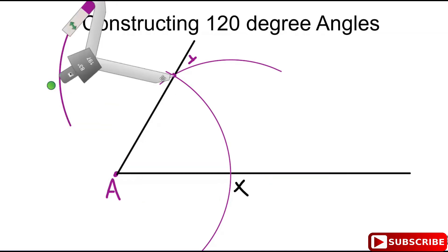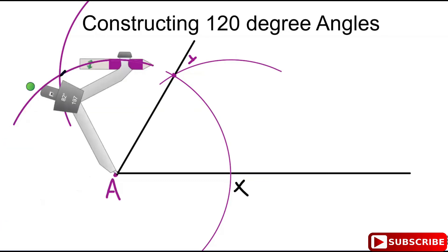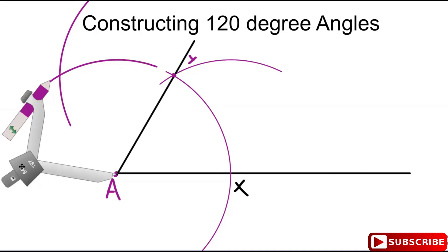Move your compass back to A and using that same degree of swing, swing an arc from A.